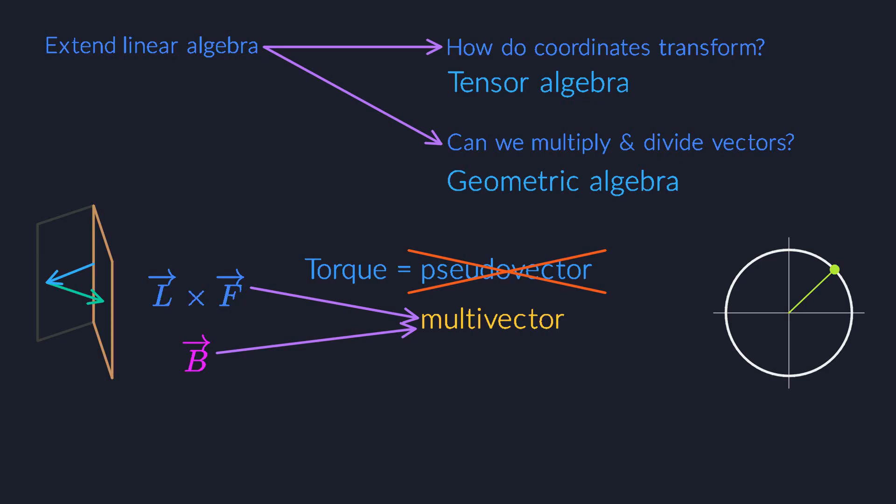Do you want to know why? Because the complex numbers are actually multivectors. The same is true for quaternions and for other well-known objects from math and physics. Geometric algebra brings all of these concepts and theories together into a single amazing picture.